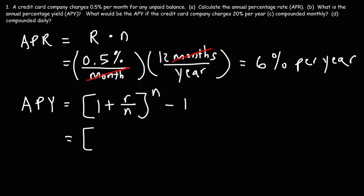Now, the difference between the APY and the APR: the APY takes into account the effect of compounded interest, whereas the APR doesn't take that into account. The APR is more of a simple interest calculation. So, the annual percentage rate is 6%. As a decimal, that's 0.06. And it's compounded monthly.